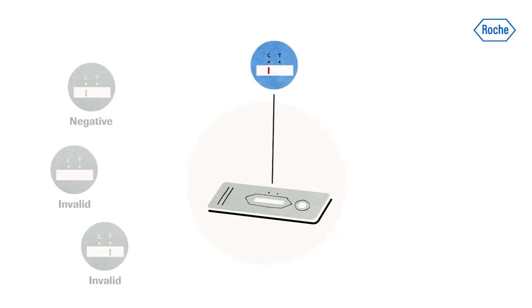In the case of a positive result, a colored line appears in the lower section of the result window. This is the test line T. Even if a test line is very faint or not uniform, the test result should be interpreted as a positive result.